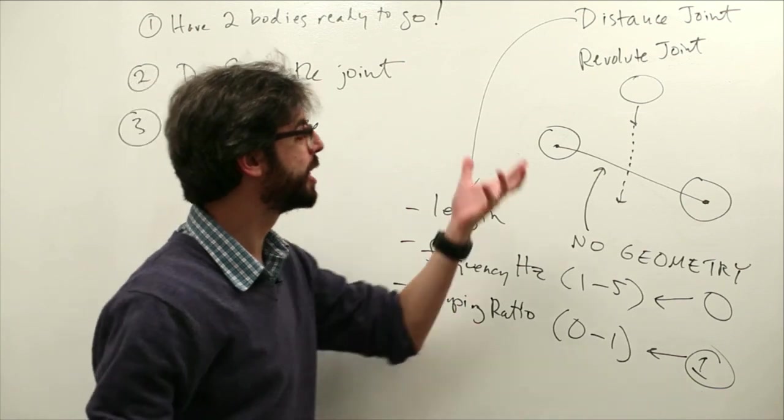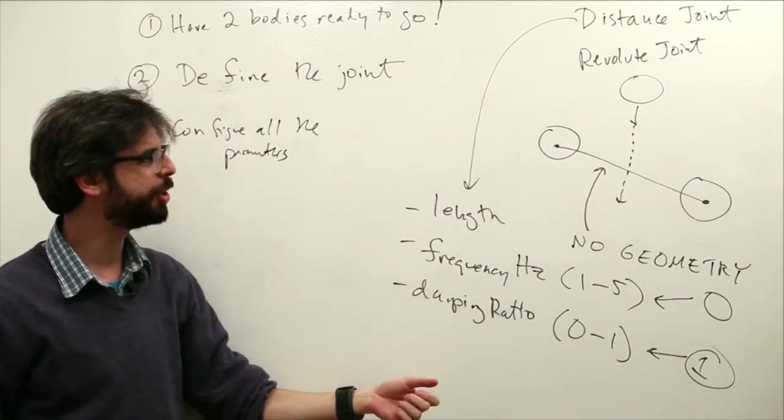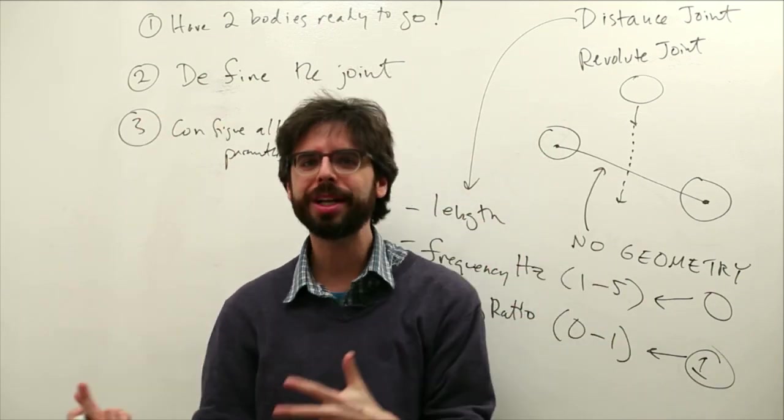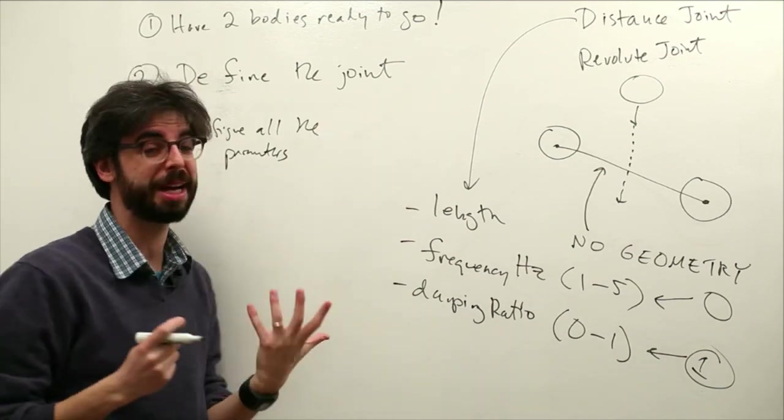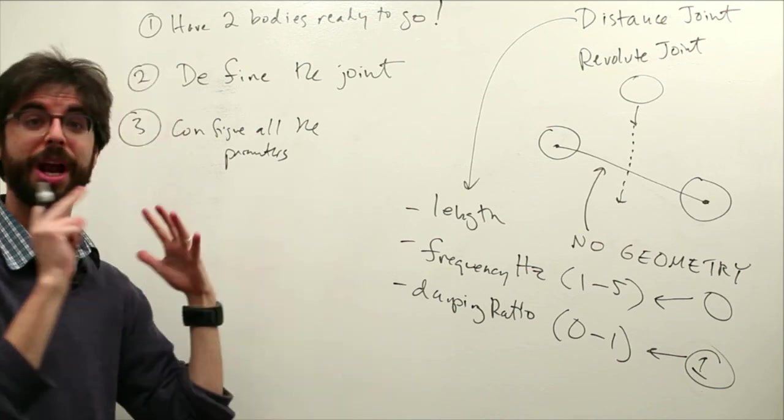And they're going to be different. So with the distance joint, we were looking at length, frequency, damping ratio. For a revolute joint, when we get to that, we're going to see there's motor speed and torque. Each joint is going to have a different set of physics properties. And the Box2D manual is the best place to look up what are the parameters and what are the ranges of values for them.